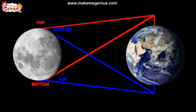The moon orbits near the equator of the earth. In the northern hemisphere, we are standing on the opposite side of the globe from countries in the southern hemisphere — we are upside down from each other. That is why we see the moon from a completely different vantage point from each other.